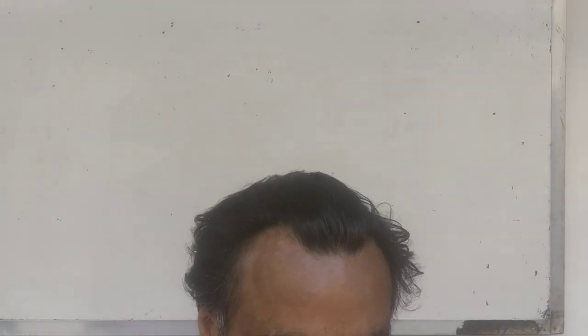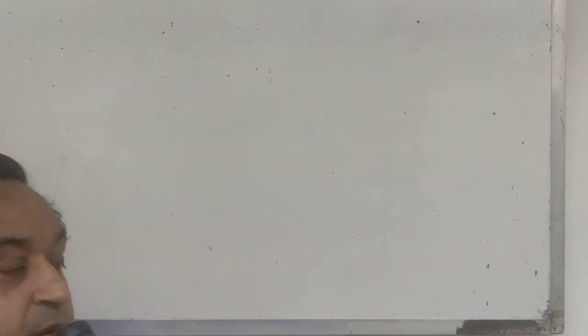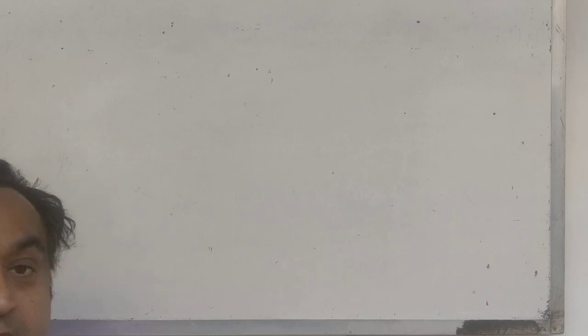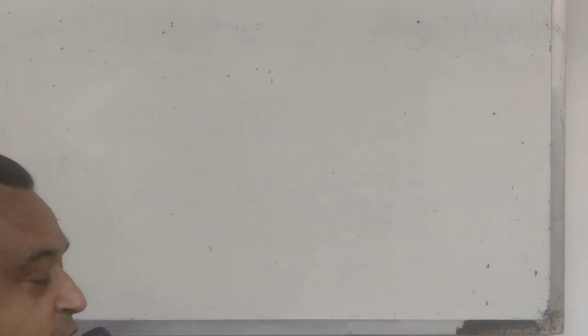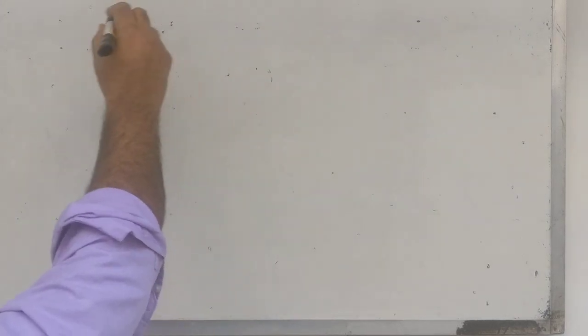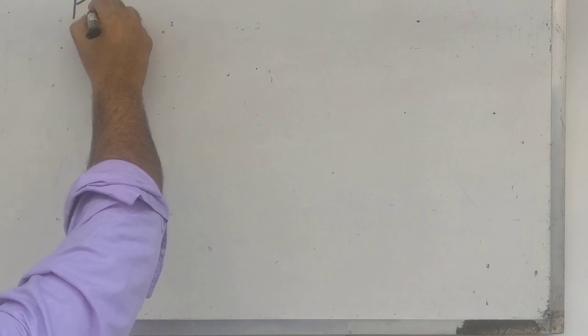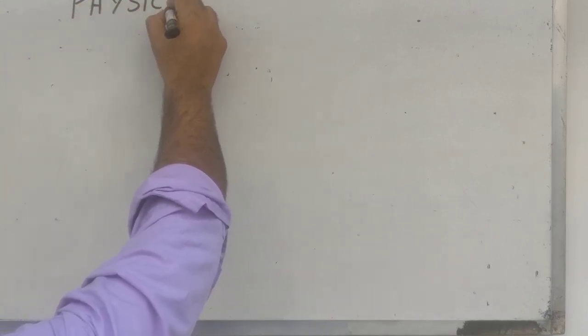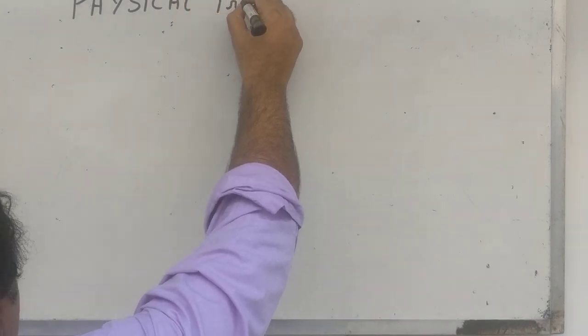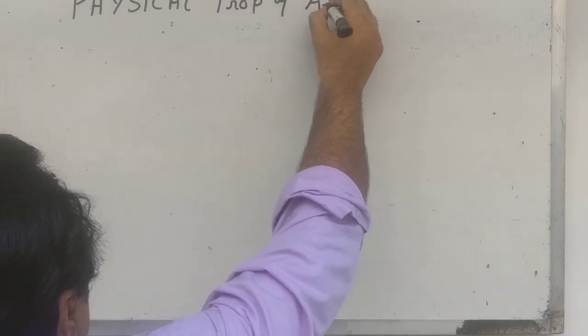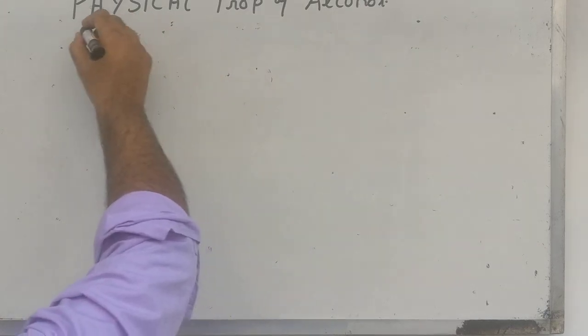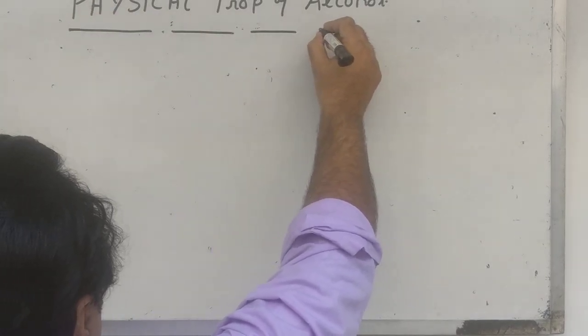Good morning students. Today we are going to have the third lecture of alcohol. We are going to study about the physical properties of alcohol and a few chemical properties of alcohol. In physical properties of alcohol, I'll be mainly discussing only two properties: number one, water solubility, and second, the boiling point.